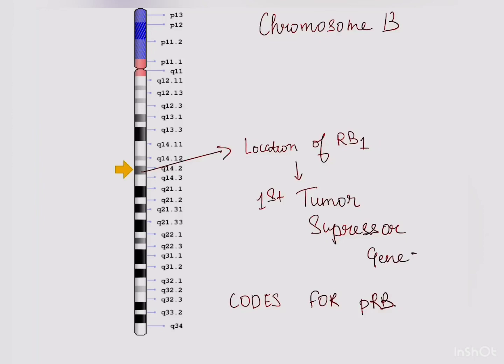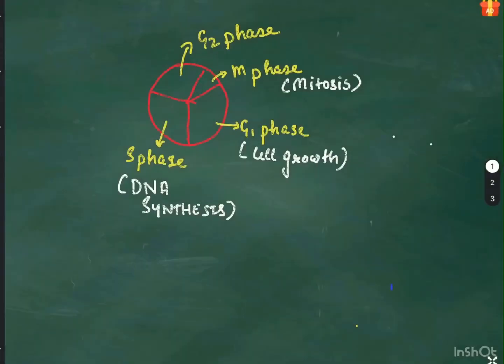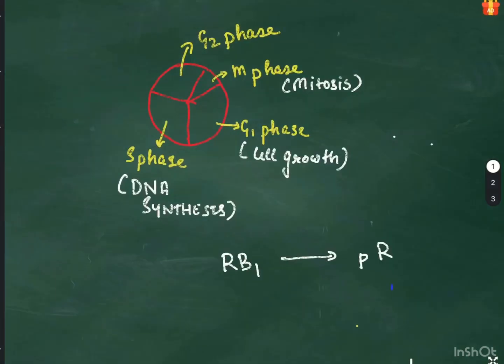These RB proteins have important function in the cell cycle. This is a cell cycle. There is a G1 phase, that is a growth phase; S phase, which is a DNA synthesis phase; G2; and an M phase where mitosis occurs. RB1 codes for the protein RB which acts on the G1 phase.